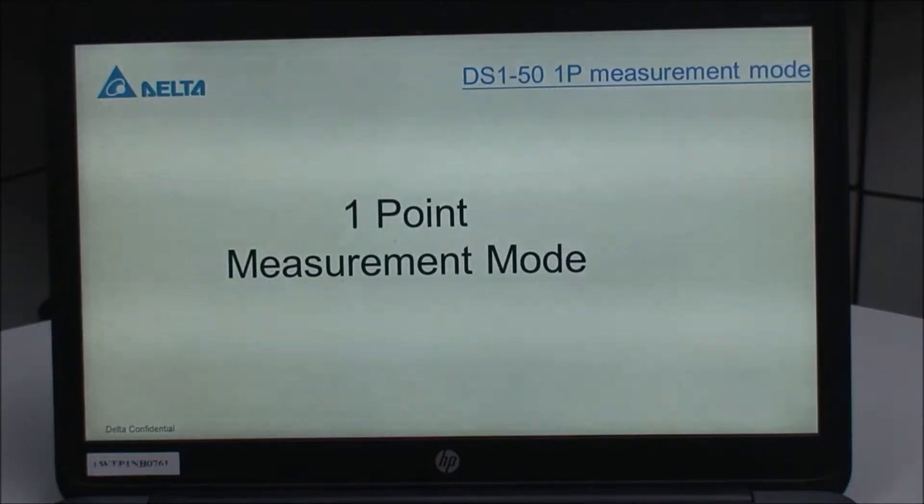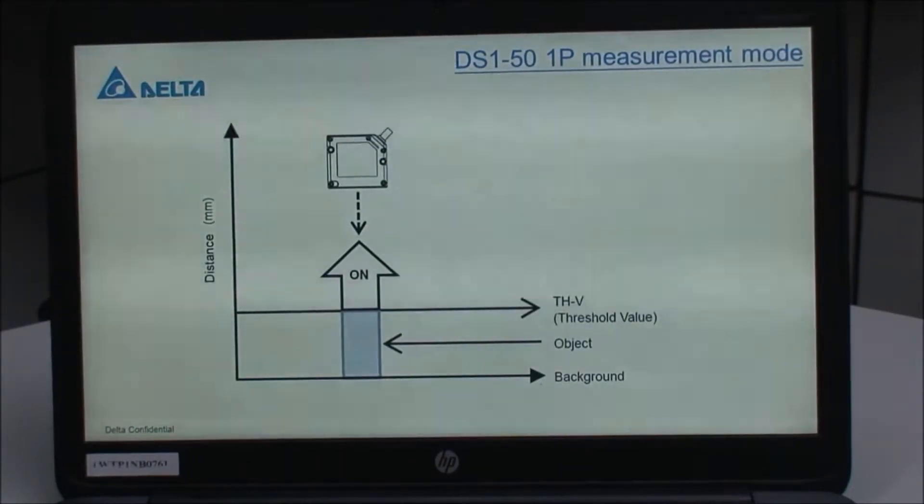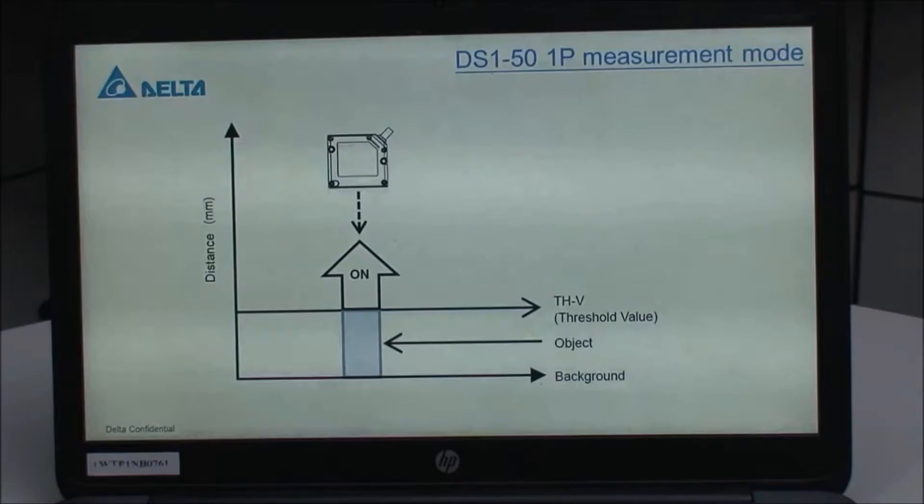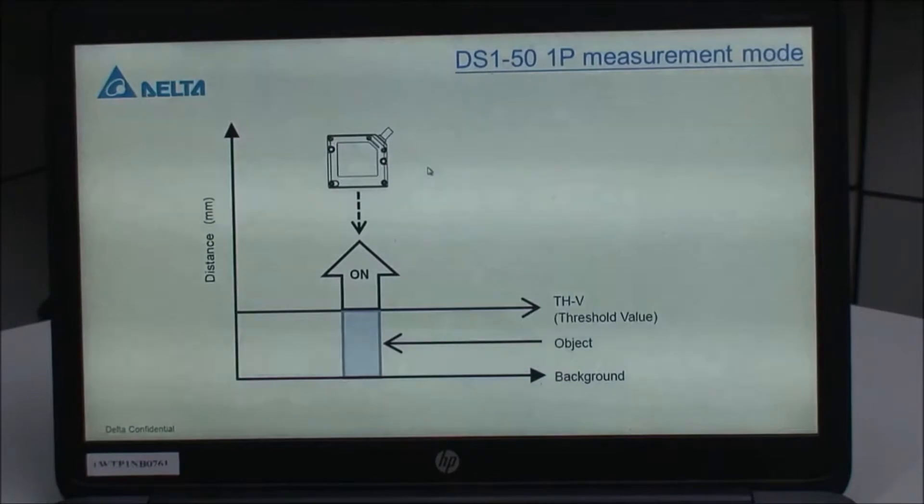We can easily understand in this picture. We need to set up the threshold value, then the sensor detects the objects. If the object's real thickness is greater than the threshold value, the indicator on HMI will turn on.